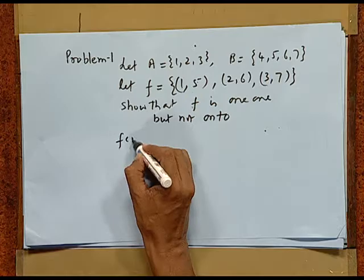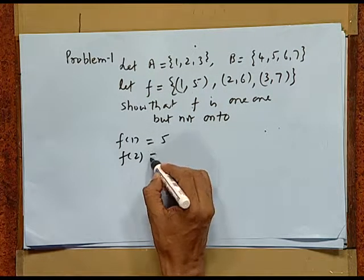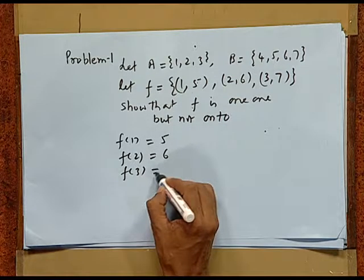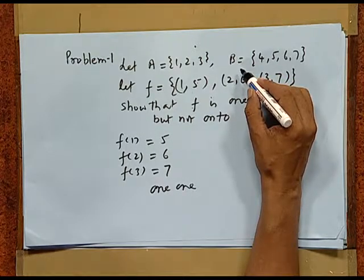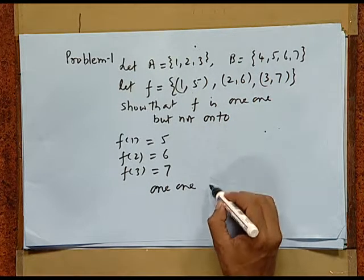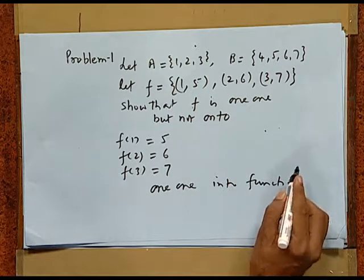So we have f(1) = 5, f(2) = 6, and f(3) = 7. Here we have a complete list of elements and their images. As seen clearly, different elements have different images. So it is clearly one-one. Here, the element 4 of set B, which is the codomain, has no pre-image. So it is an into function.